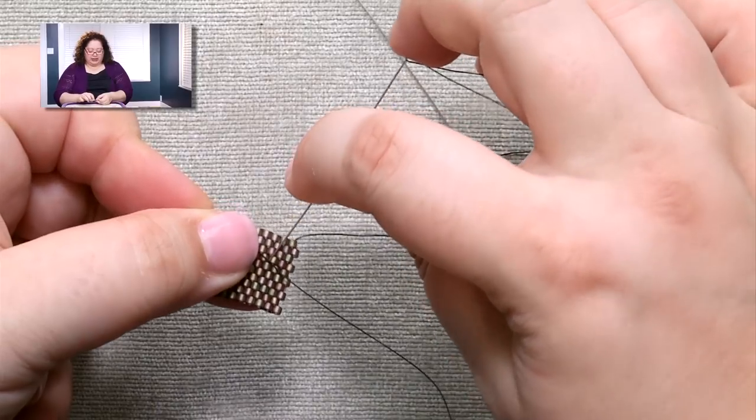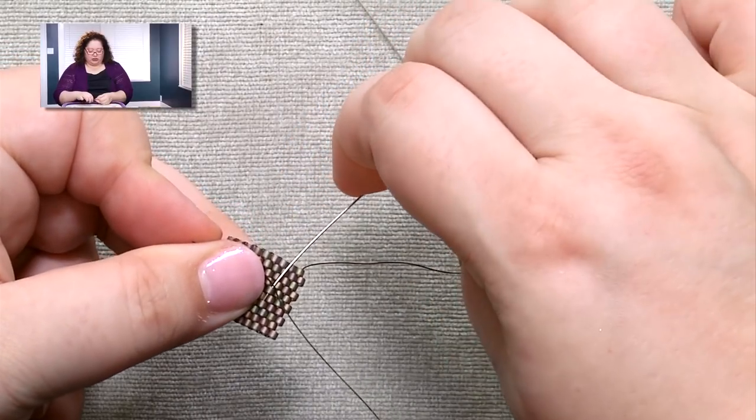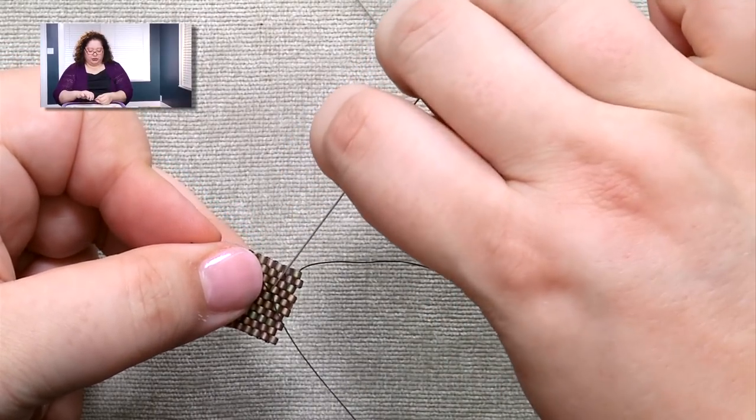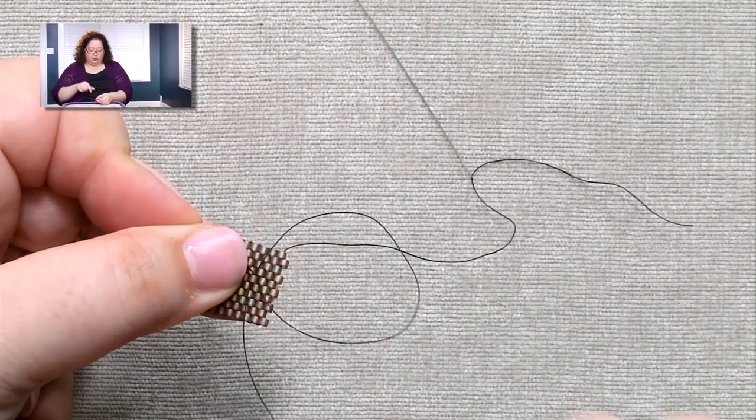So that's why you want to make sure that you're going into a bead that's right adjacent to the one that you were coming out of. And in this case I'm just going to go down another extra bead, so I went up two, I went down two, I'm going to keep going down one more, so now I'm going down three.